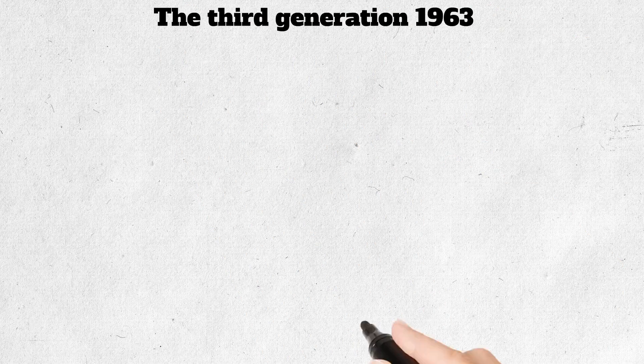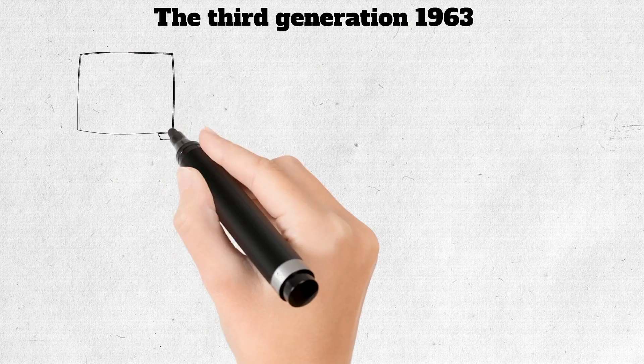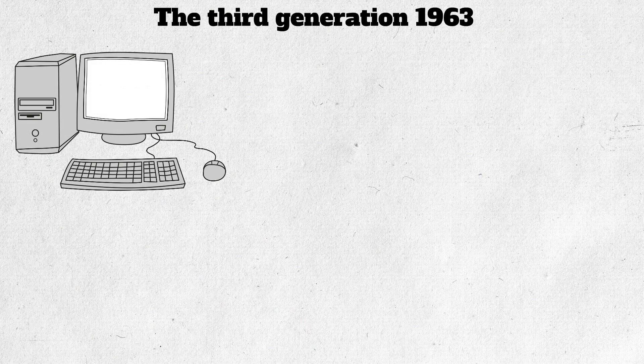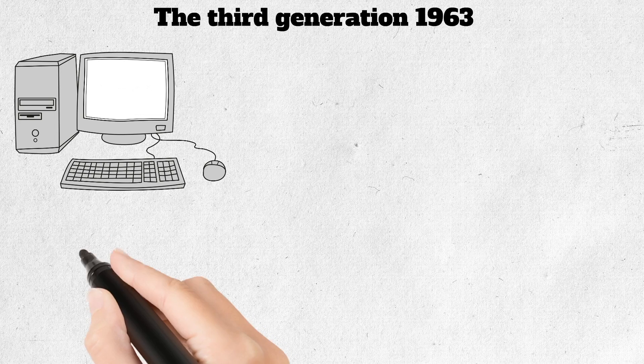The third generation is the one we live in today, that began in 1963. The invention of the integrated circuit brought us the third generation of computers. With this invention, computers became smaller, more powerful, more reliable, and they are able to run many different programs at the same time.